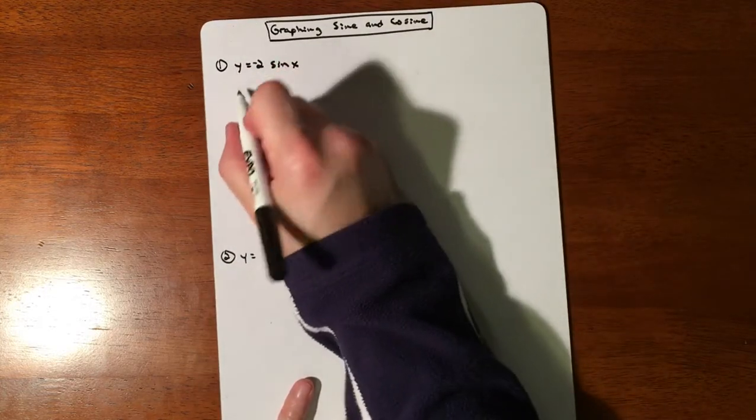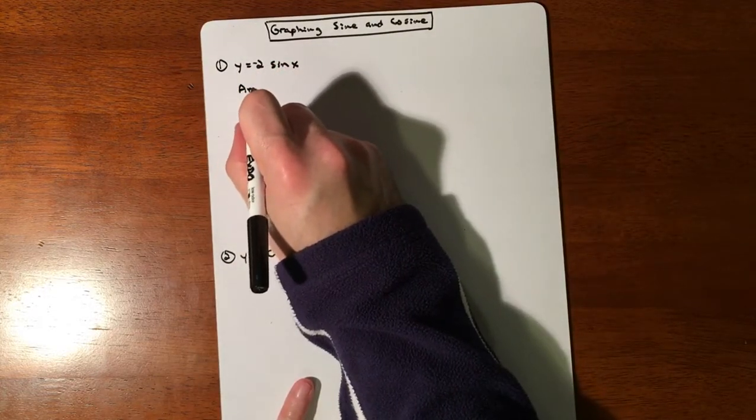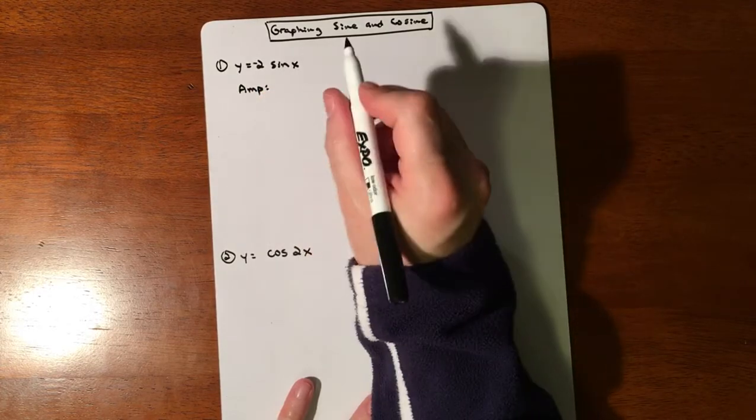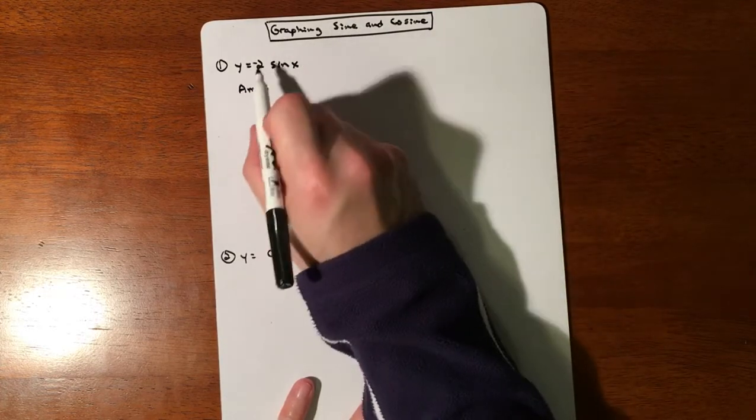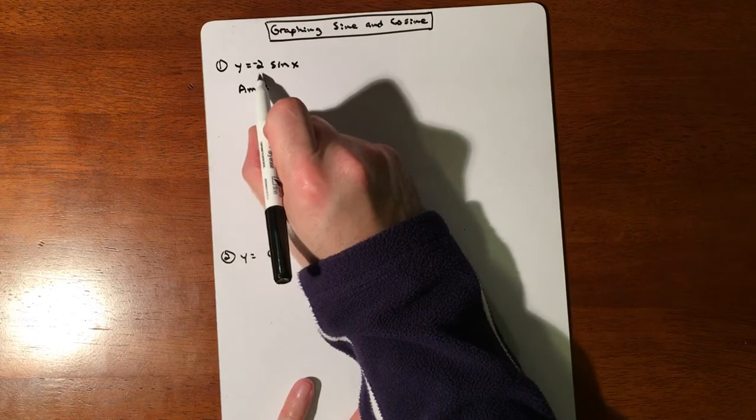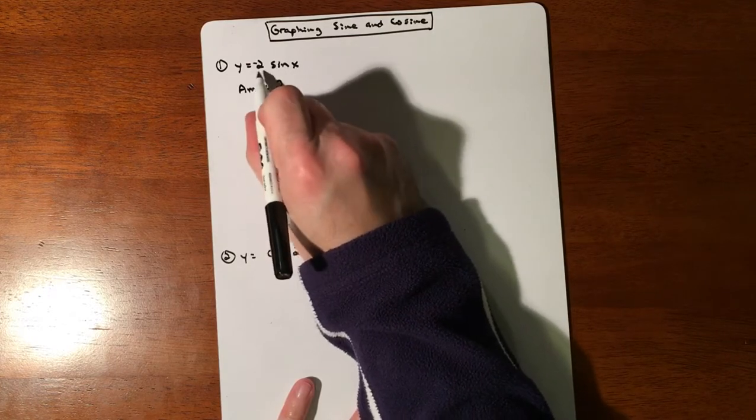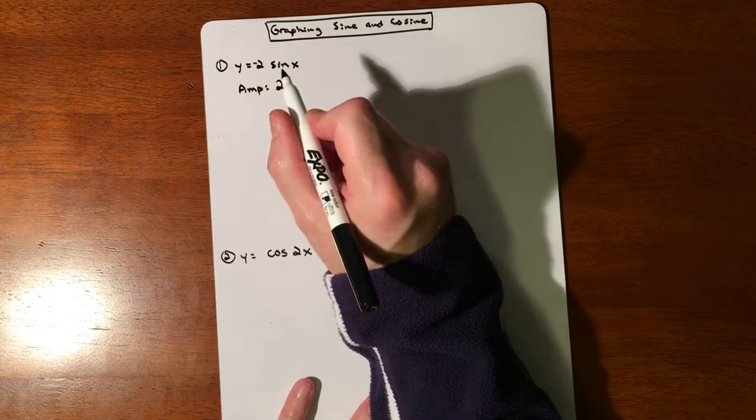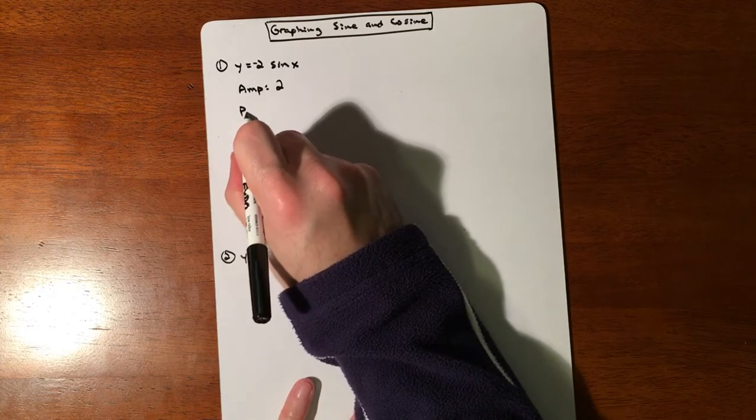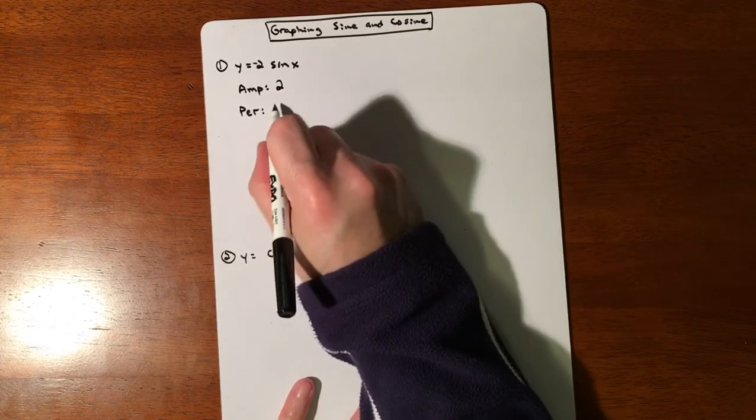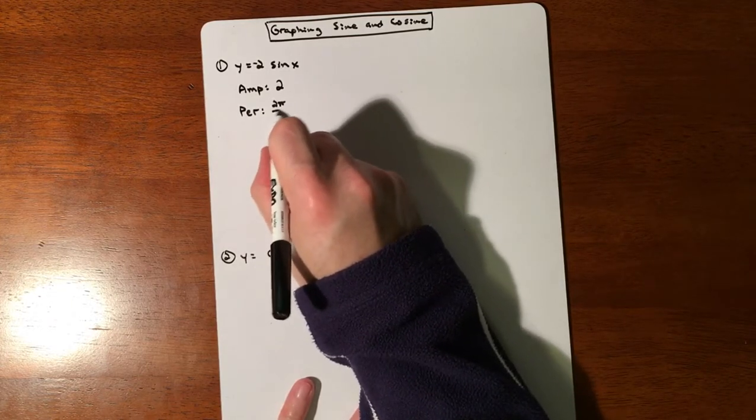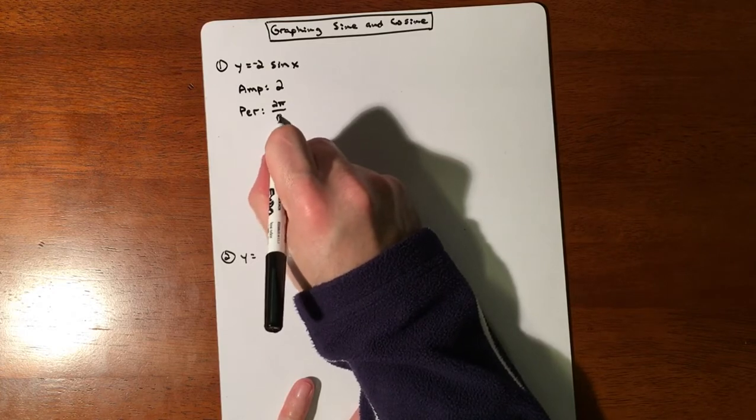So what we need is to know what the amplitude is. The amplitude is 2. That negative is not part of the amplitude. It is going to vertically reflect our graph.